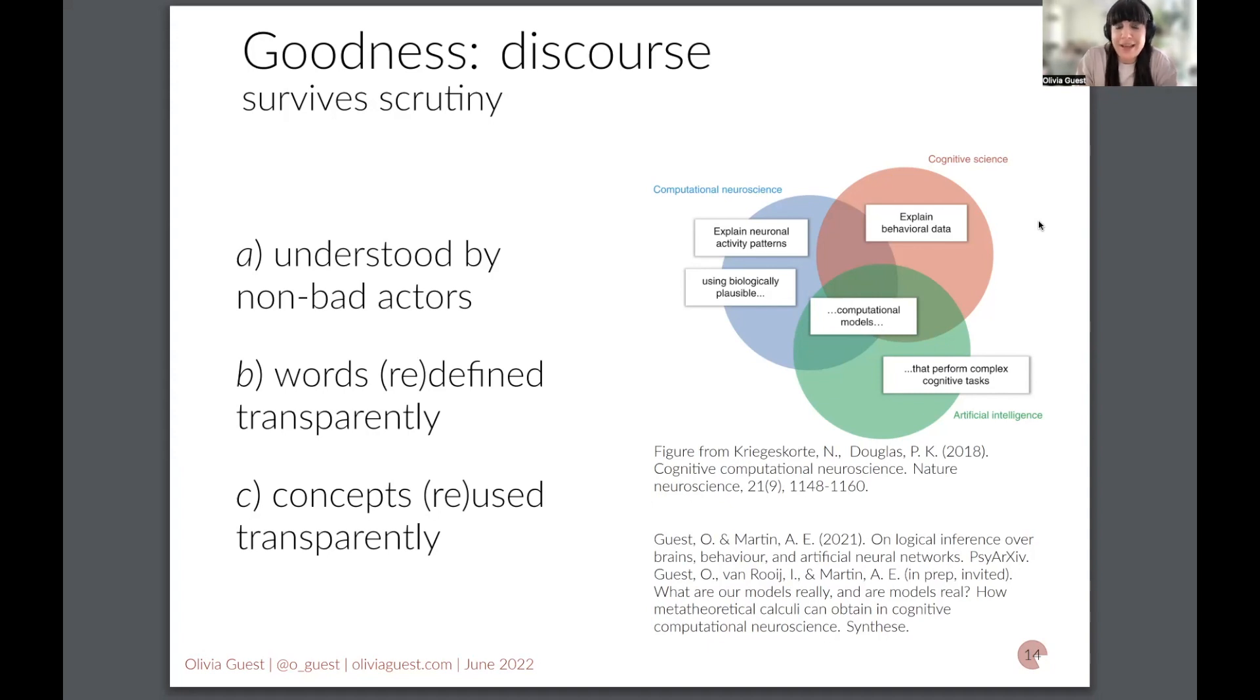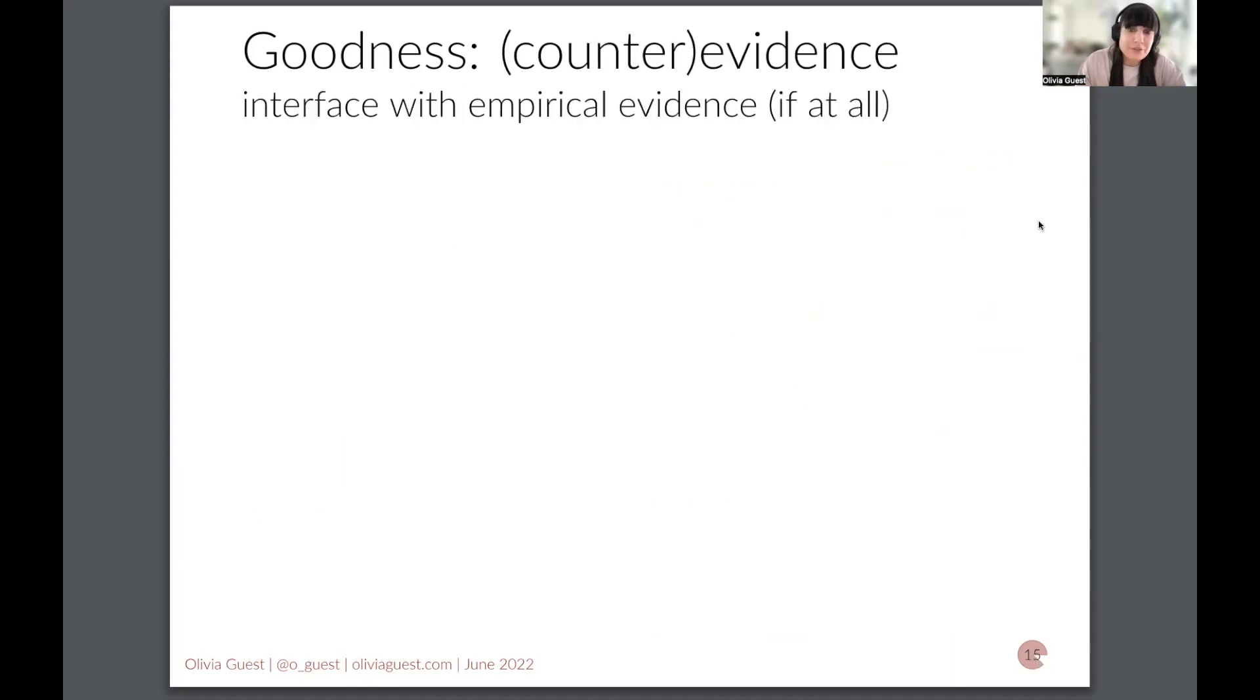And I'm not even sure if anyone has explicitly written that deeply other than in this upcoming paper with Iris van Roy and Andrea Martin that I have. Has anyone really compared or contrasted or explained why two fields of very similar names exist? So these things should be clear in order to facilitate communication. Another aspect of goodness is counter evidence or evidence and how that interfaces with the theory.